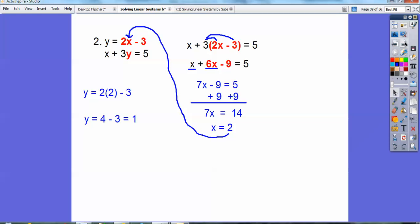So 2 times 2 minus 3 is 4 minus 3, which is 1 right there. So the answer is always an ordered pair, and we always put x first, you guys. So x comma y, so it's going to be 2 comma 1. Okay, pretty slick, huh?